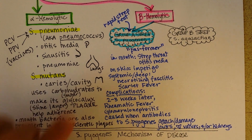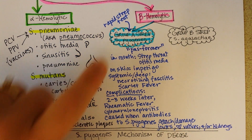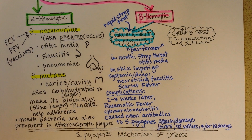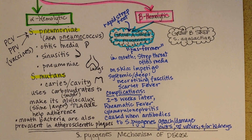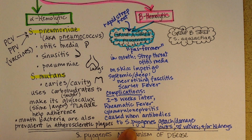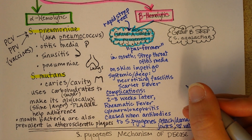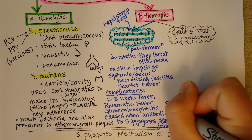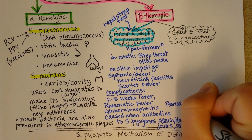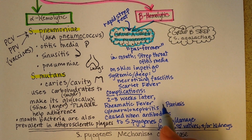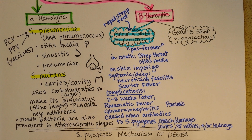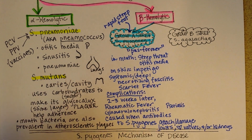If you start taking antibiotics after you've had symptoms for quite a while, you still could be at risk for some of these complications. Some students also mentioned that another complication is psoriasis, which is antibody production that affects the skin. So that would be another possibility that I just learned about recently.